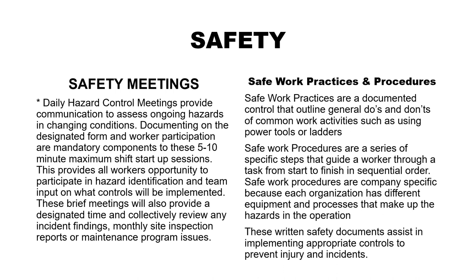Daily hazard control meetings provide communication to assess ongoing hazards and changing conditions. Documenting worker participation on the designated form is mandatory at these five-to-ten-minute maximum shift startup sessions. This provides all workers the opportunity to participate in hazard identification and team input on what controls will be implemented, and collectively review incident findings, monthly site inspection reports, or maintenance program issues. Safe work practices are documented controls outlining general dos and don'ts of common work activities. Safe work procedures are a series of specific steps guiding a worker through a task from start to finish in sequential order — company specific, because each organization has different equipment and processes.